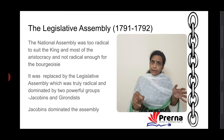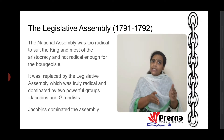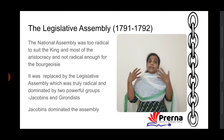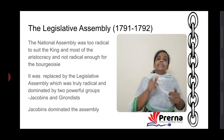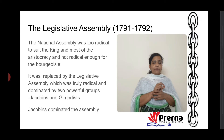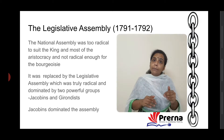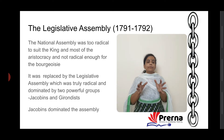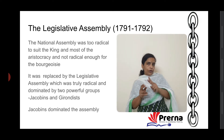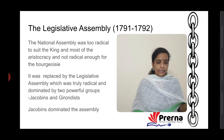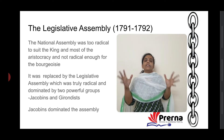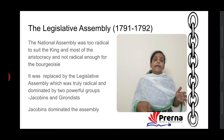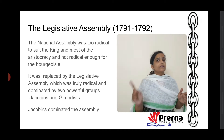The middle class wanted more — they wanted to make France a republic, so they opposed the National Assembly. The period of the National Assembly came to an end in 1791, bringing another body into power: the Legislative Assembly. In the Legislative Assembly, two groups dominated — they were the Jacobins and the Girondins.